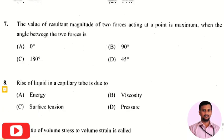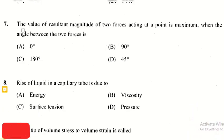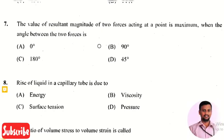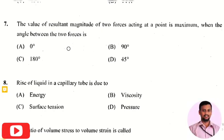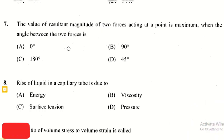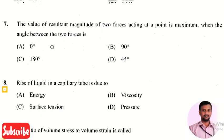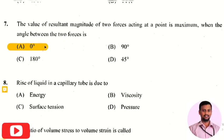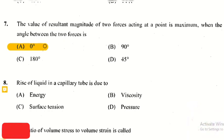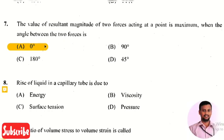The next question: the resultant magnitude of two forces acting at a point is maximum when the angle between the two forces is? The right answer is option 1 — zero degrees. When the angle is zero, the two forces acting at a point give a maximum resultant.